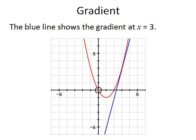So visually, this is what it looked like. At each point on the red parabola, there is a gradient, which is changing. At the point where x is equal to 3 here, we have a gradient equal to that of the blue line.